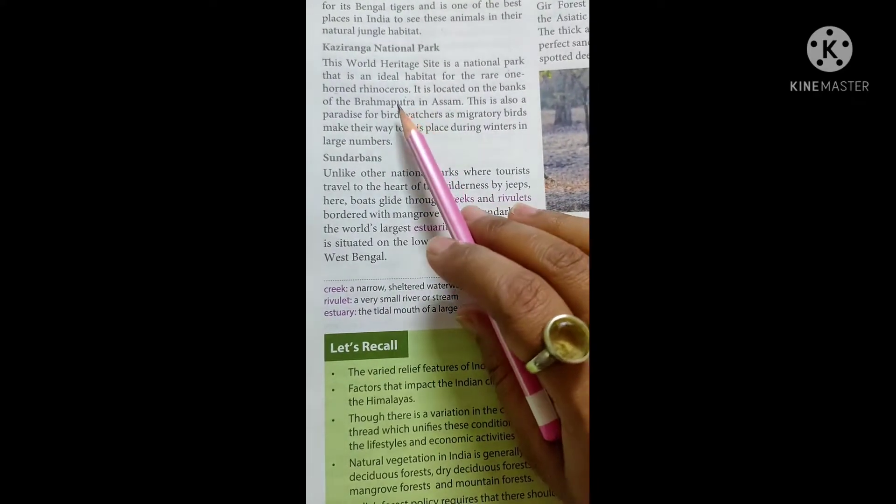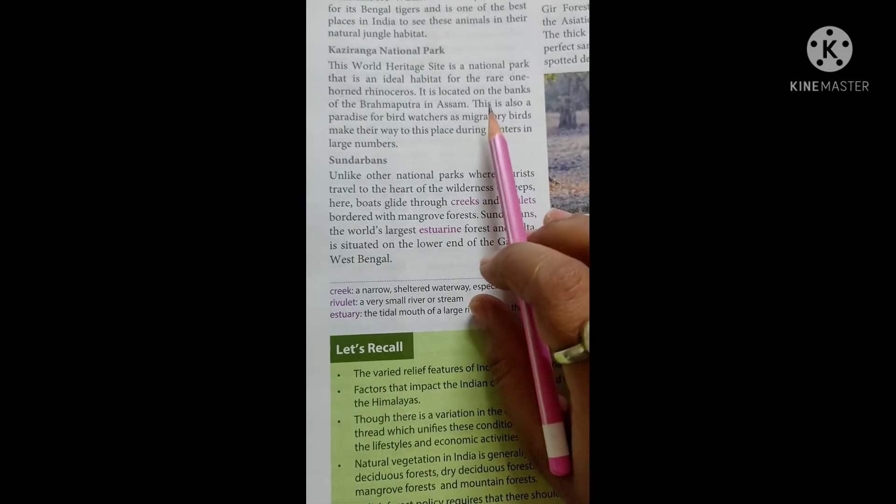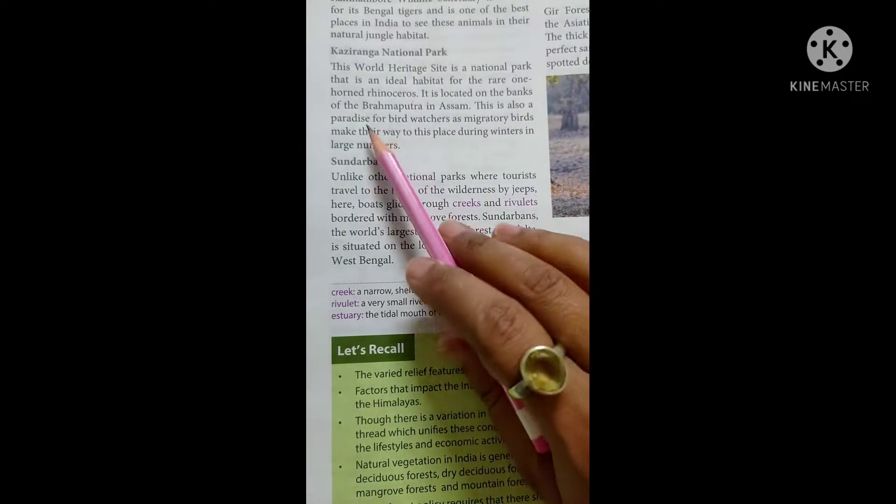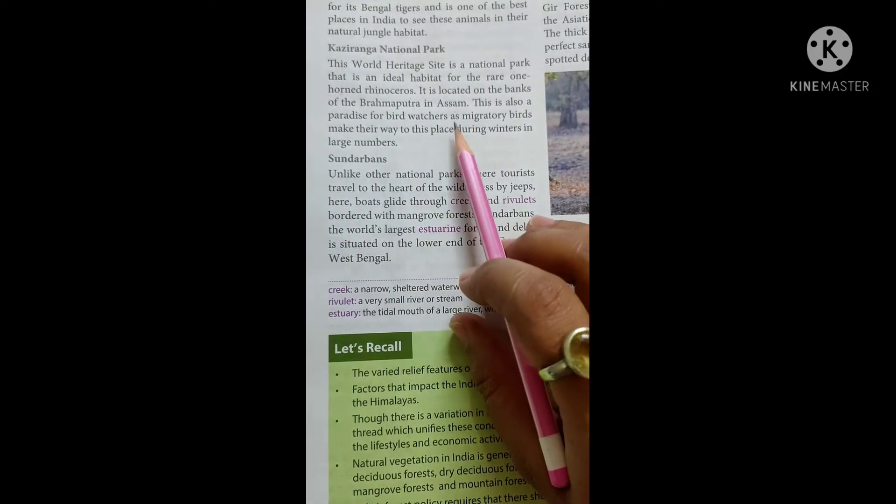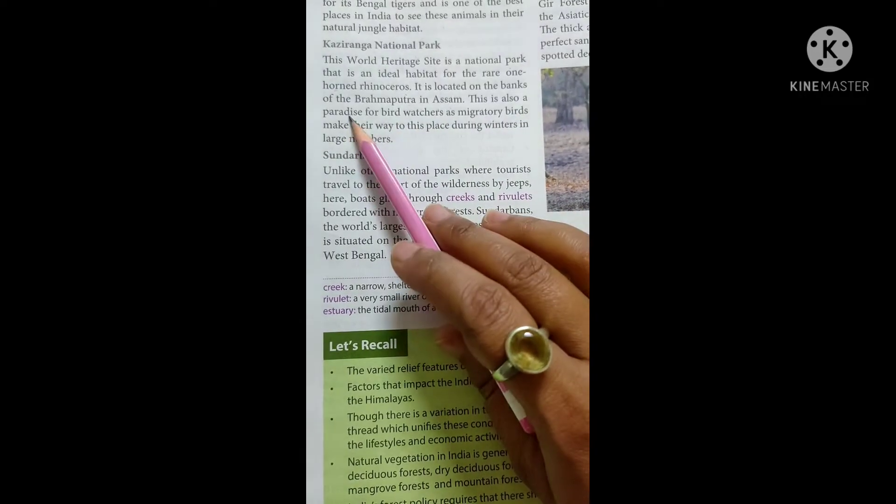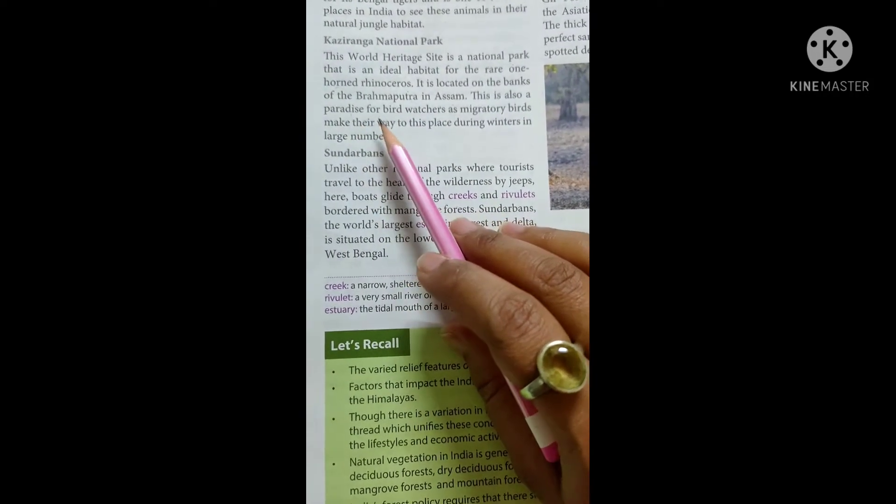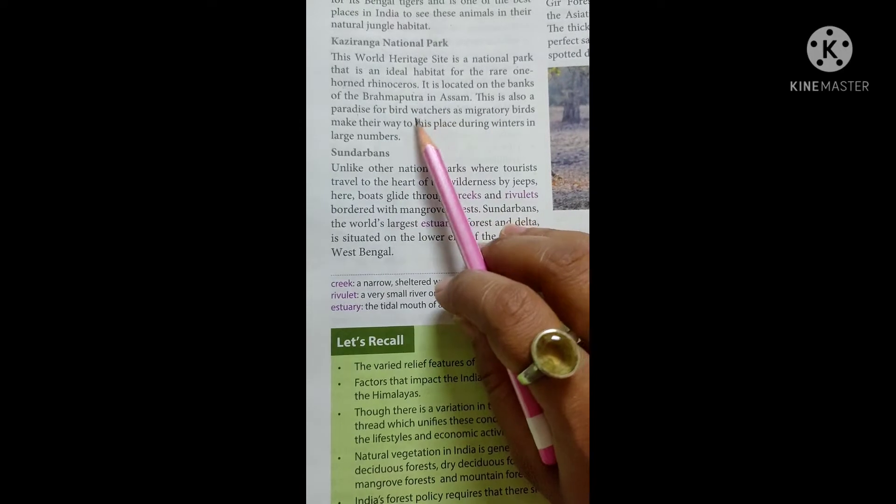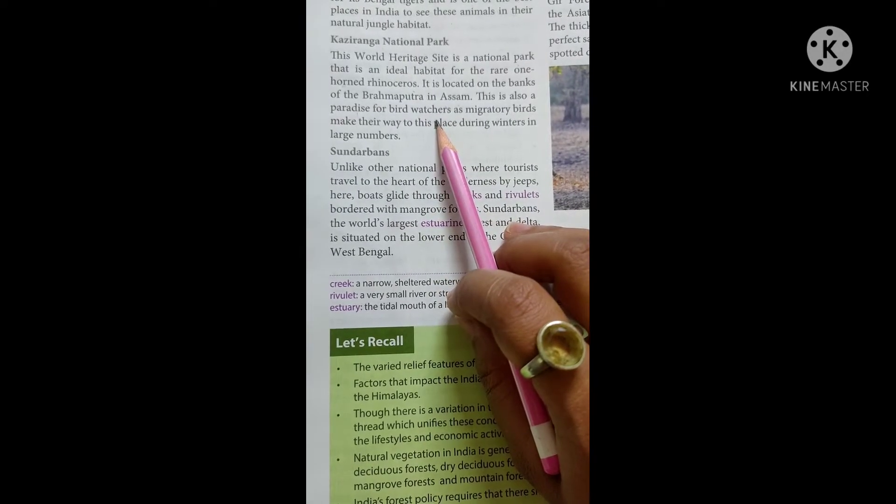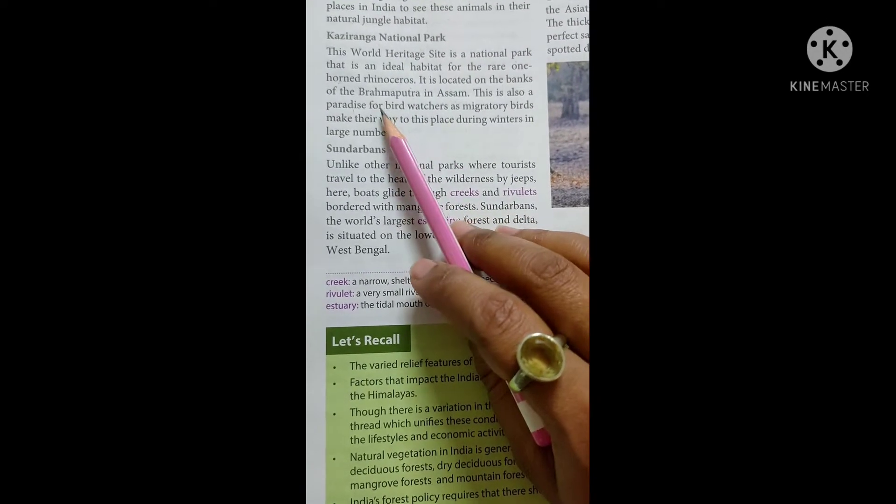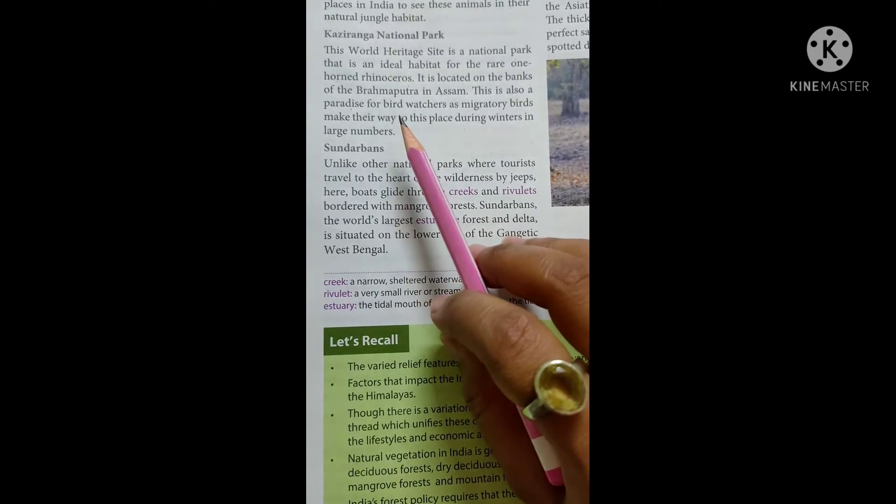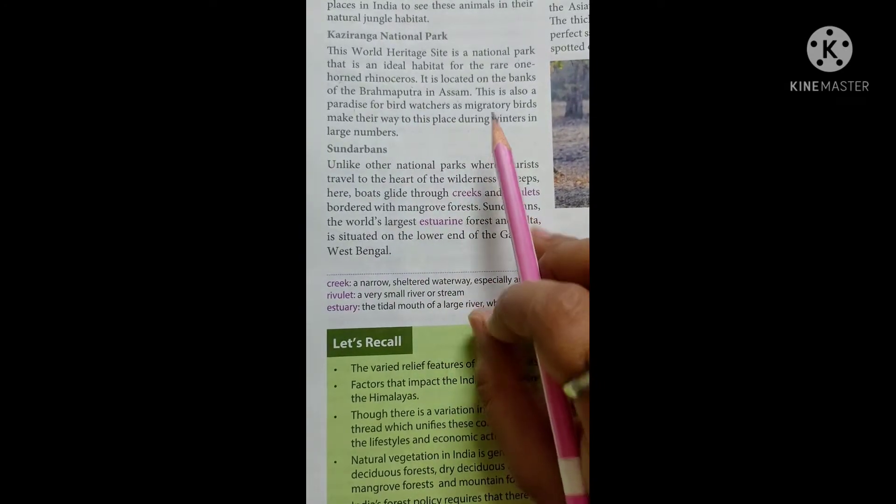Brahmaputra's banks are on the floor of Brahmaputra. This is also a paradise for bird watchers. Paradise is called a swarg. This is a place where people love birds, this is a swarg for them because there are many migratory birds.